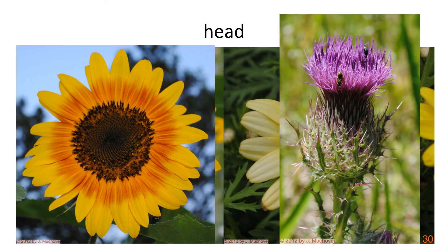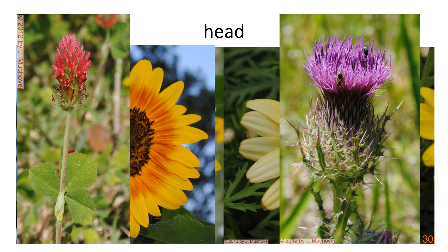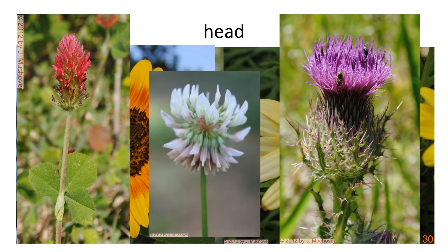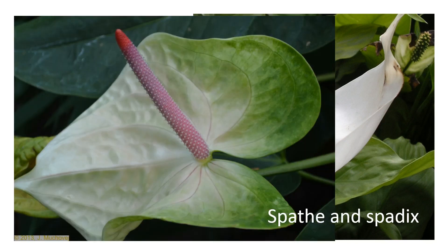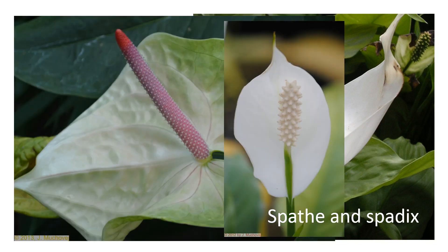The head gives the impression that there is a single flower. The spathe and spadix is unique, as the central stalk is congested with flowers and there is a large bract that subtends the stalk.